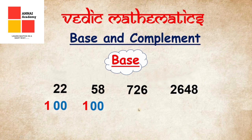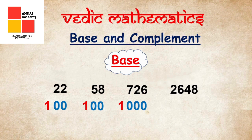While finding the base of a 3-digit number, we have to put 3 zeros and before that we have to put 1. That becomes 1,000. So the base of 726 is 1,000.